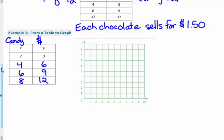I used those numbers on purpose because they came out to be nice whole numbers — easy points to graph. Each time I multiplied my candy bars by $1.50, it's a unit rate — the constant in this relationship. So I'm going to take my graph and plot the ordered pairs: (2, 3), (4, 6), (6, 9), and (8, 12). First I have to label my graph.